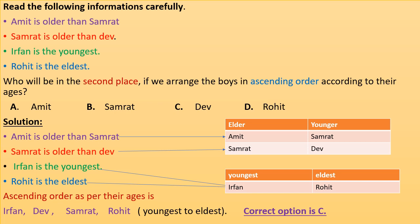From table 1, Samrat is next and Rohit is the eldest, so Rohit is the last one to come in the order from youngest to eldest. So correct option is C.